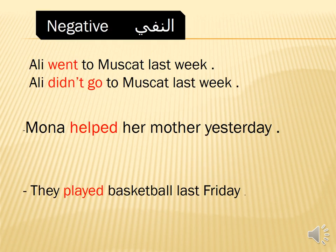Now, the negative — النفي. النفي هو عدم حدوث الشيء. Look at the example: Ali went to Muscat last week. If we want to say Ali did not go to Muscat last week: Ali didn't go to Muscat last week. We use didn't and the present form of the verb — the present of 'went' is 'go'.